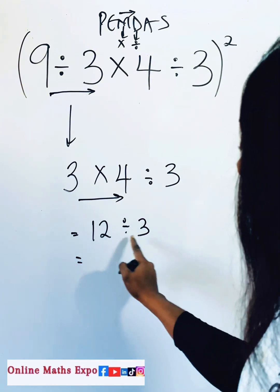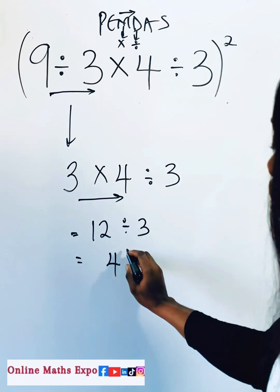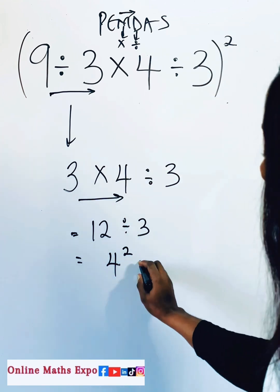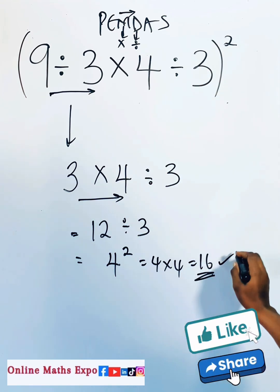And when you divide 12 by 3, it gives you 4. Remember this exponent. So you are going to raise it to the power of 2. And that will give you 4 times 4, which is 16. And that is our answer.